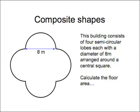Composite shapes. This building consists of four semicircular lobes, each with a diameter of 8 meters, arranged around a central square. Try calculating the floor area. Again, you might want to pause the video at this point.